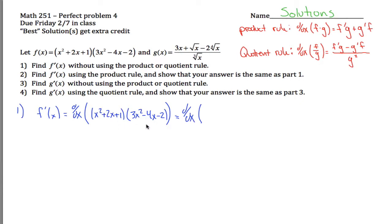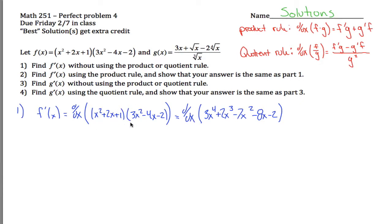If you multiply these together and combine like terms, we end up with 3x to the fourth power plus 2x cubed minus 7x squared minus 8x minus 2. The point is I haven't done any calculus at all — all I did was algebra on the thing I will eventually differentiate. Rather than take the derivative directly, figure out what this equals and take that derivative. Why is that better? Because this derivative is easier to take.